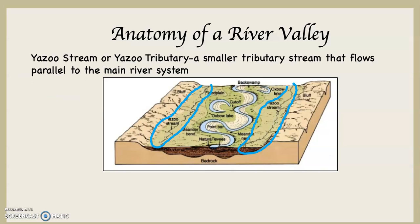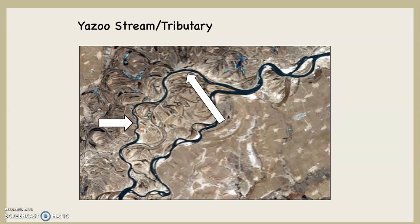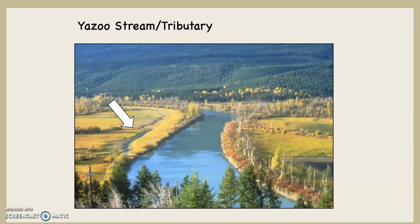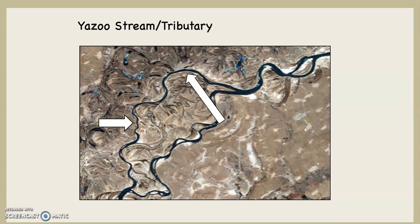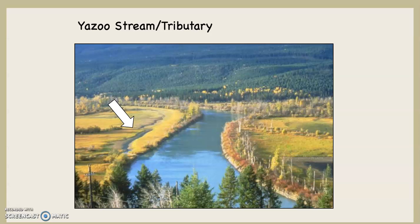A Yazoo stream or Yazoo tributary is a smaller tributary stream that flows parallel to the main river system, which you can see circled here on this diagram in blue. This is not the greatest satellite photograph, but you can see the white arrows pointing at the Yazoo stream or Yazoo tributary. This next picture is a little bit better — you can see the white arrow pointing at a Yazoo tributary that's flowing parallel to that main river system.